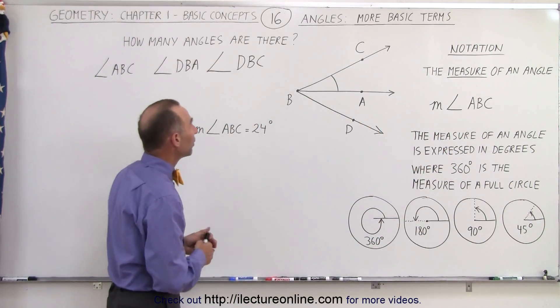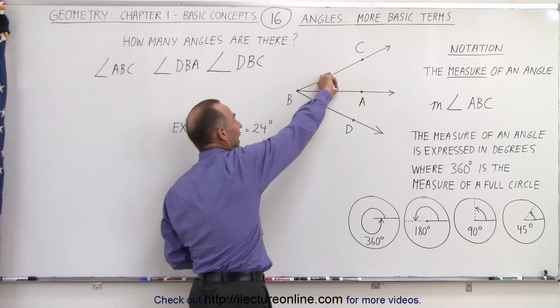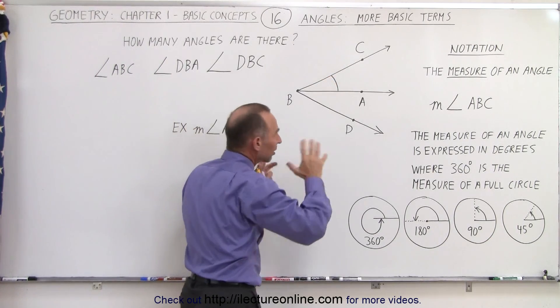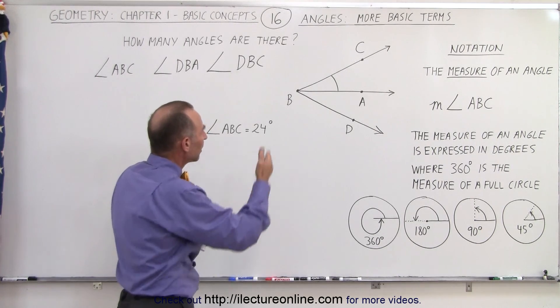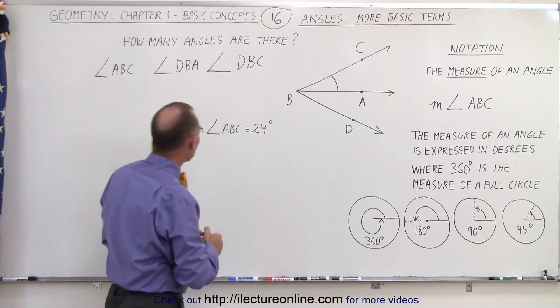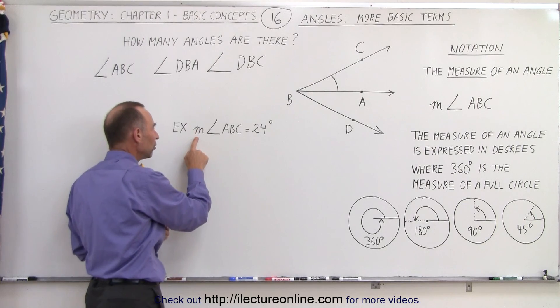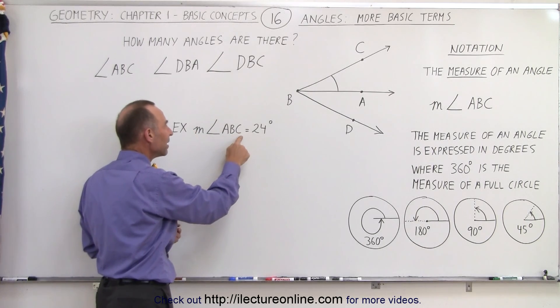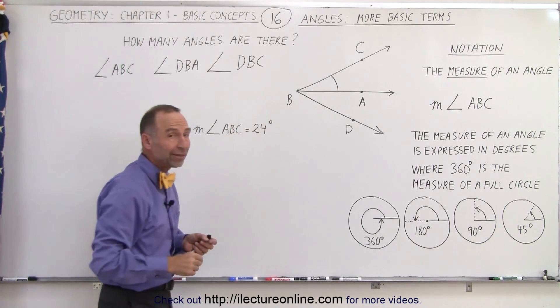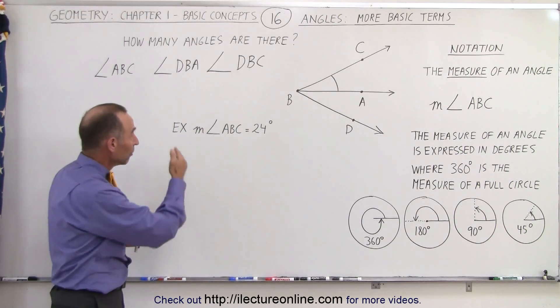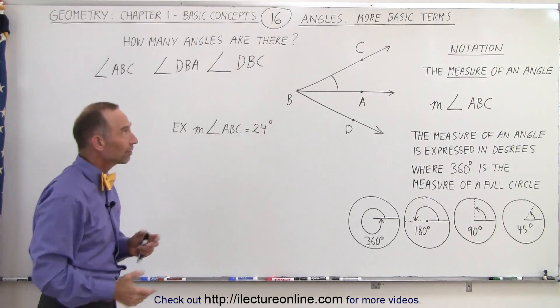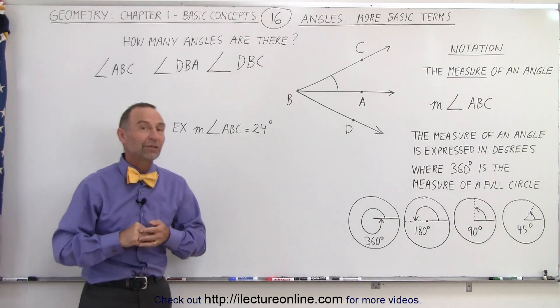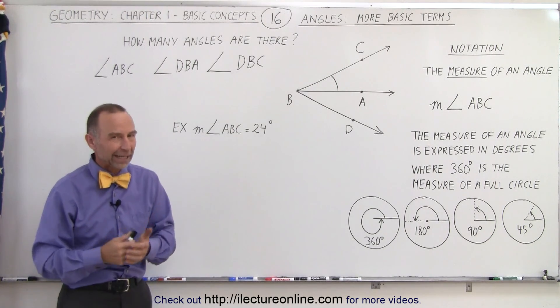Here, for example, if we want to measure that angle right here, it looks like it's estimated. I didn't actually use a protractor, which is commonly what we would use, but let's say that's about 24 degrees. We can say that the measure of angle ABC is equal to 24 degrees. And that's exactly how we say it: the measure of angle ABC is equal to 24 degrees. So, some additional basic terms related to angles in geometry.